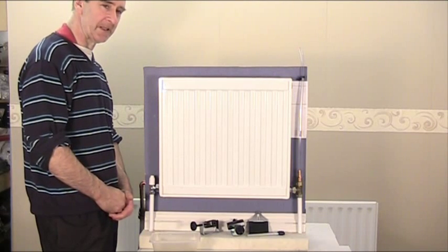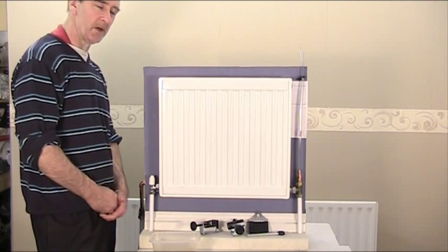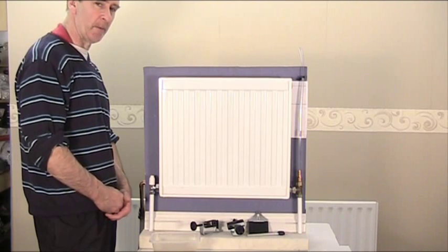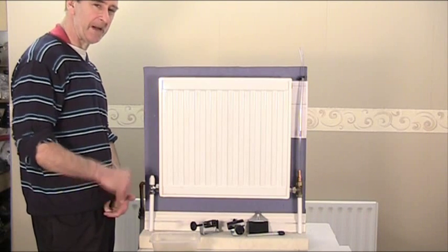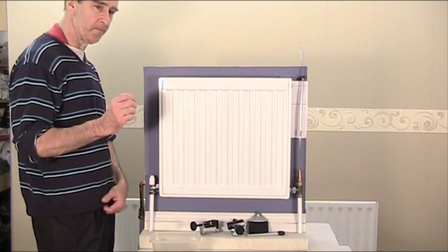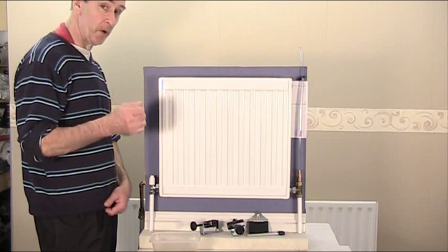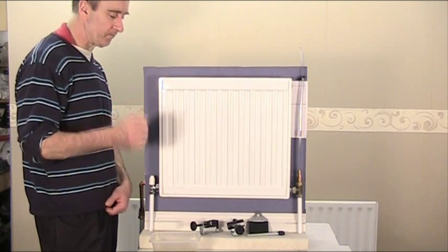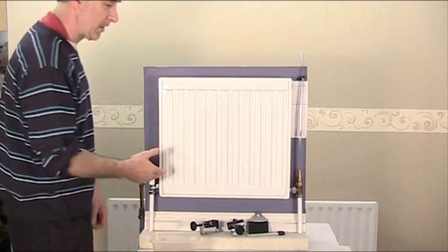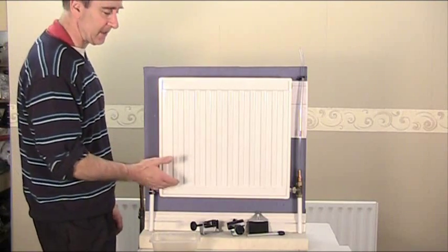The second type, more common now, is a sealed or pressurized system, usually better known as a combi boiler system, which is manually filled. You have a filling point usually underneath the boiler which you have to manually fill. But in each system, the way the water enters the radiator is exactly the same.